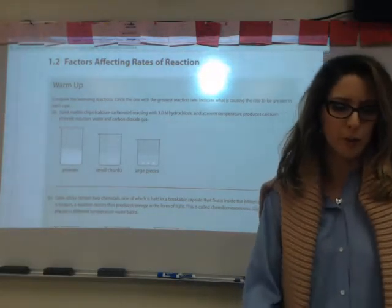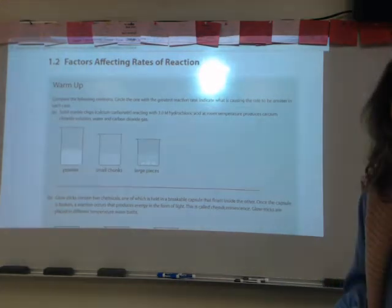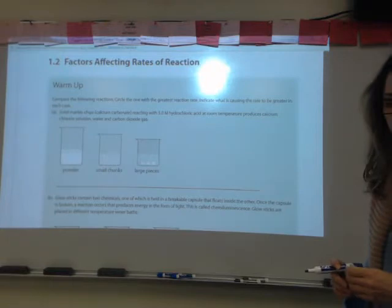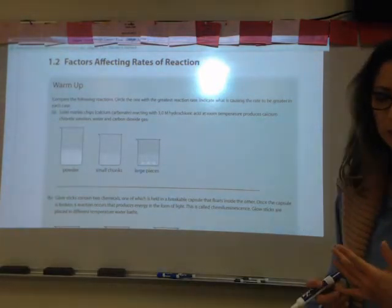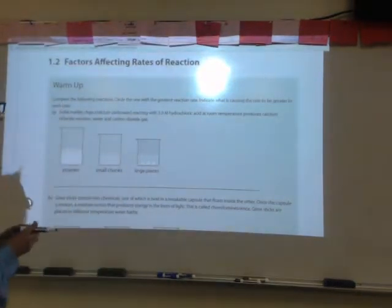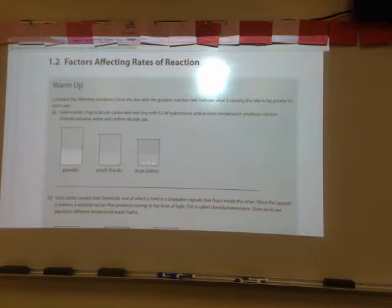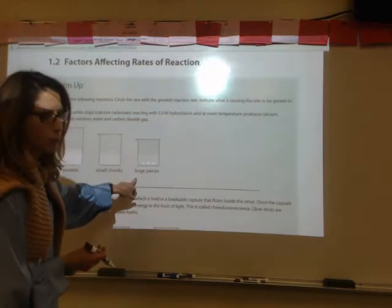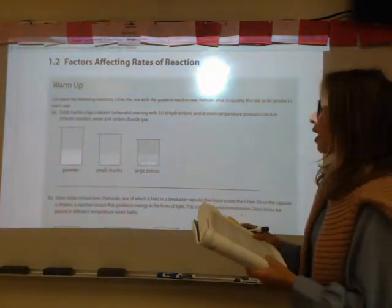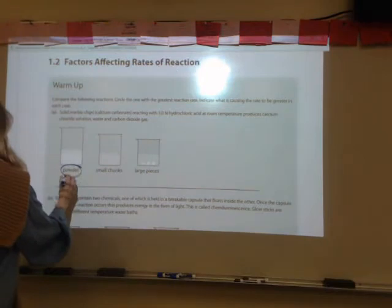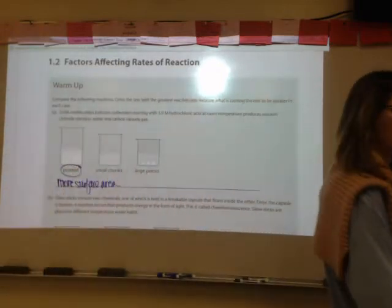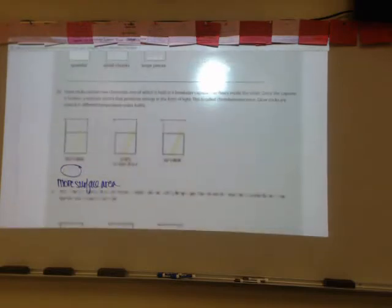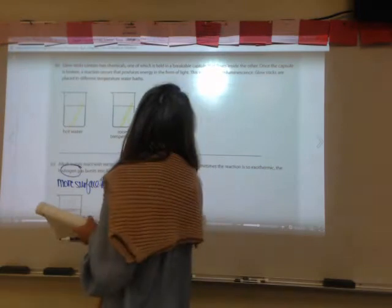We are on section 2.2, factors affecting rates of reaction. The warm-up asks us to compare reactions A, B, and C and circle the one with the greatest reaction rate. In A, we have a solid marble chip — calcium carbonate — reacting with 3 molar hydrochloric acid at room temperature. We have powder, small chunks, and large pieces. The powder would have the greatest reaction rate because it has more surface area.